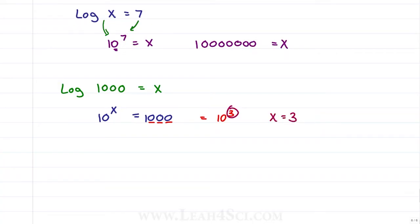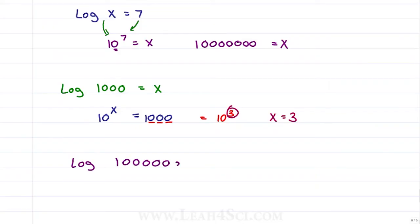A faster way: if 10 to the x equals a thousand, just count your zeros and that is your answer — because a thousand is just 10 to the third. By this logic, if you solve log of a number with nine zeros, all you have to do is count how many zeros you have. Nine zeros means 10 to the x equals that number, so x equals 9.